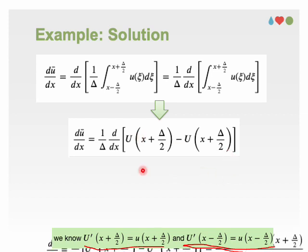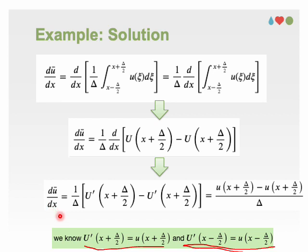We get to our well-known relationship that states the derivative of the filtered function U bar at a given X, using the defined kernel, is simply the central difference at that given X.